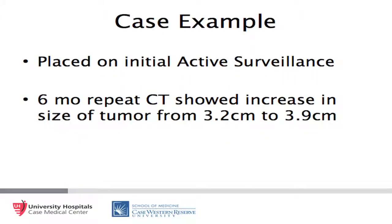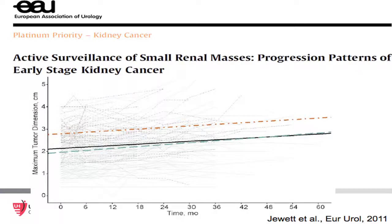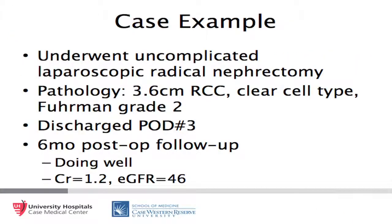After discussing the pros and cons of all approaches, the patient decided on initial active surveillance. At six months, a repeat CT scan showed an increase in tumor size from 3.2 to 3.9 centimeters. Although malignant tumors on active surveillance showed similar growth rates to benign tumors on average, there was concern for aggressive high-grade disease. The patient therefore underwent an uncomplicated laparoscopic radical nephrectomy. Pathology revealed a 3.6 centimeter clear cell renal cell carcinoma, Fuhrman Grade II. She was discharged on postoperative day three to a skilled nursing facility, and at six months is doing well with a creatinine of 1.2 and an estimated GFR of 46.